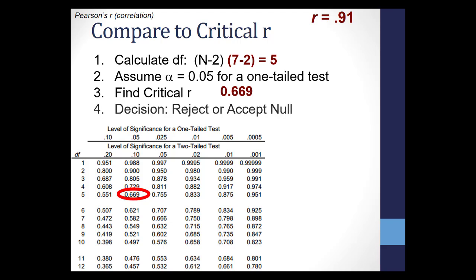We use that in our decision to reject or accept the null hypothesis. Remember that if our calculated statistic is equal to or higher than the critical value, you would reject the null hypothesis, while if it is less than the critical value, you would accept the null hypothesis.